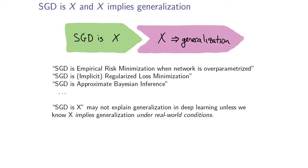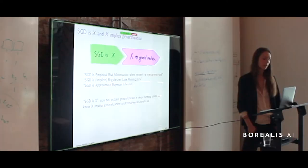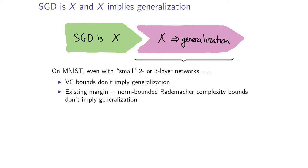Approaches to explaining why SGD leads to generalization can be broken into two parts: showing that SGD is X, and that X implies generalization. Work in the literature says SGD is empirical risk minimization when the network is overparameterized, or implicit regularized loss minimization, or approximate Bayesian inference. However, none of these statements actually explain generalization unless we know that X implies generalization under real-world conditions. In our work, we focus on that second part — X implies generalization — using statistical learning theory. Existing VC bounds and norm-based bounds don't apply to generalization.